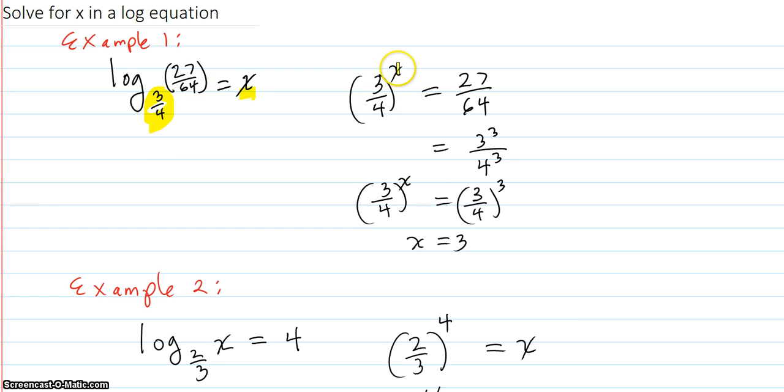X is the exponent you put on the base 3/4 to get 27/64. Then you try to maneuver the 27/64 to have the base 3/4, and they will for these kinds of problems. It will be easy to manipulate it.